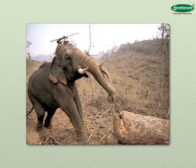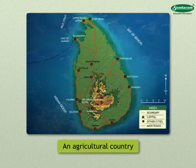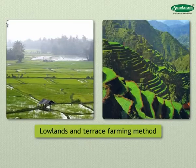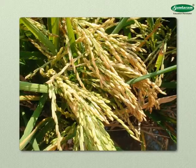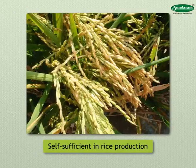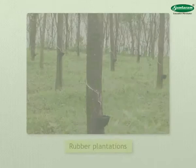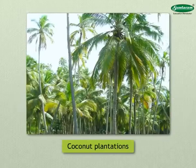Sri Lanka is an agricultural country. Rice is grown in the lowlands and by the terrace farming method on hill slopes. Earlier the production of rice was less, but it has increased with the use of modern technology, and the country is now self-sufficient in rice production. Tea plantations are found on the upper slopes of the mountains, and Sri Lanka is one of the major countries exporting tea. There are rubber plantations on the lower slopes of the mountains, and coconut plantations in the lowlands of the western and southern coastal regions.